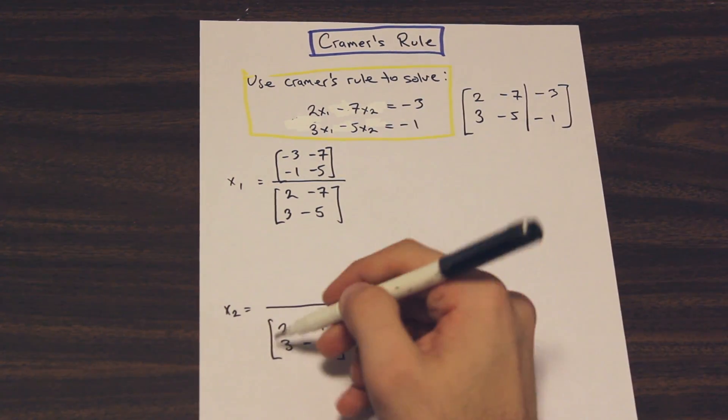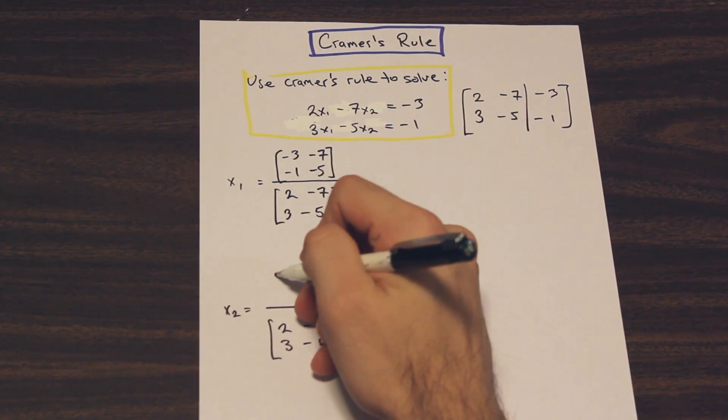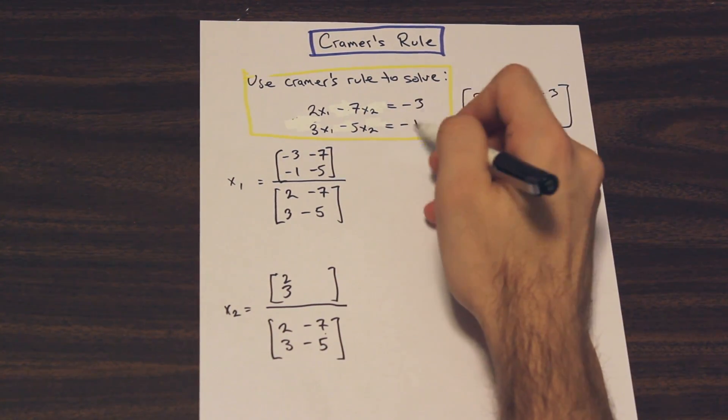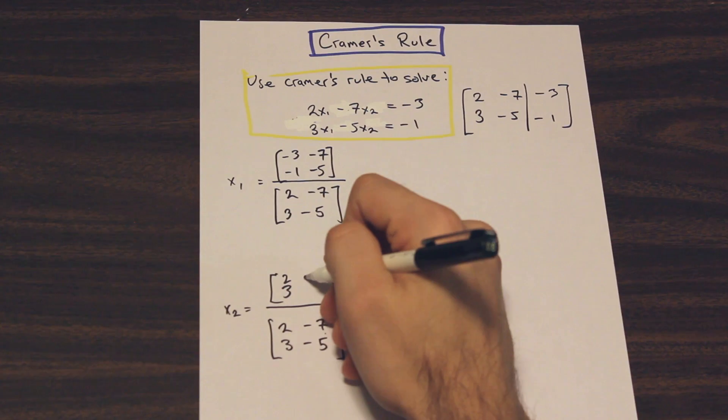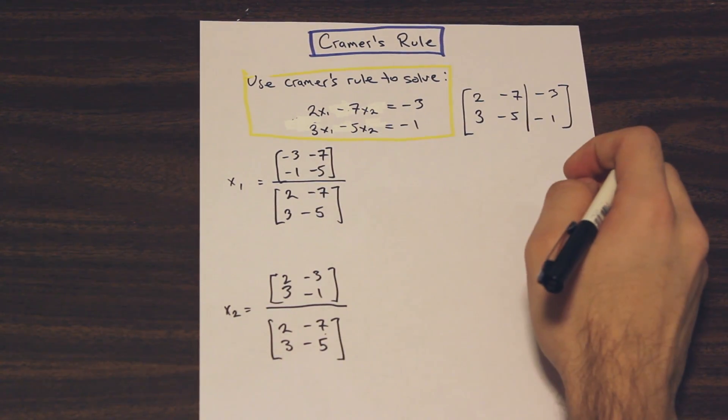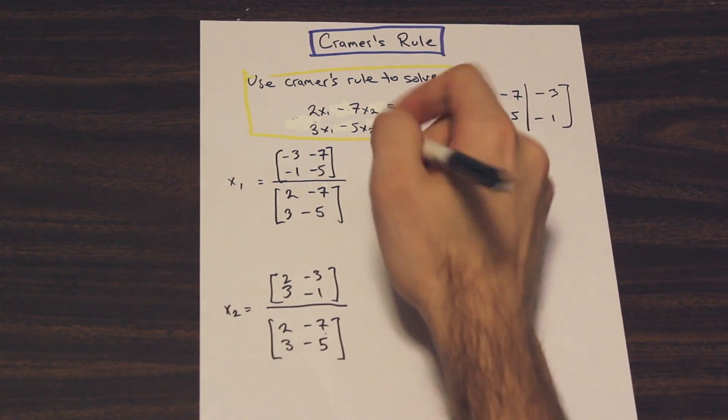For x2, the first column is going to stay the same, and we're going to take the values on the right side of the equation and input them on the second column of our numerator matrix. And now all that's left to do is to calculate x1 and x2.